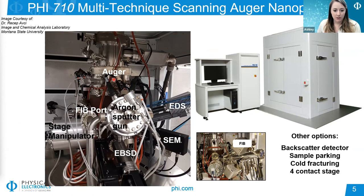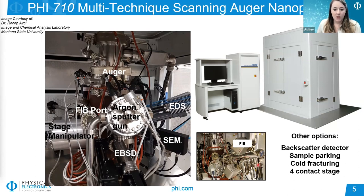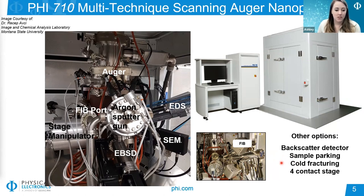In addition to its primary function, the AES instrument also has several in-situ attachments available, including options to add an EDS, EBSD, and backscatter detectors. We also have an in-situ focused ion beam (FIB) available on the system, as well as other options for sample handling such as a parking wheel allowing you to park up to six platens in vacuum, a sample fracturing device for cold fracturing at liquid nitrogen temperatures, and a four-contact stage that allows for electrical measurements to be made in-situ.